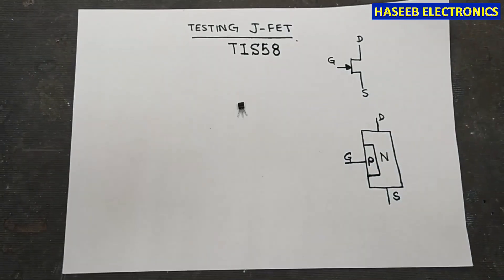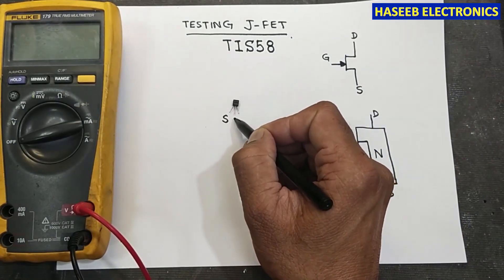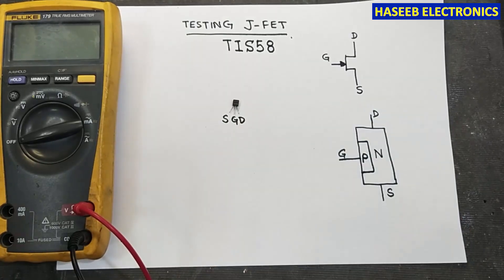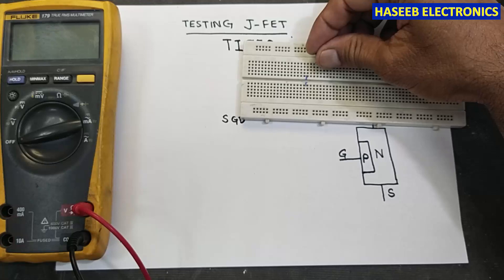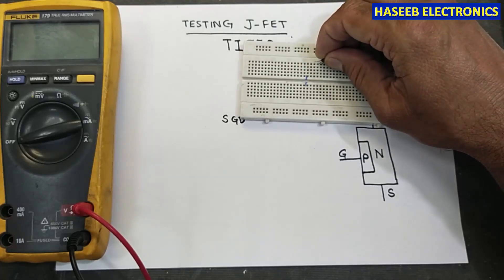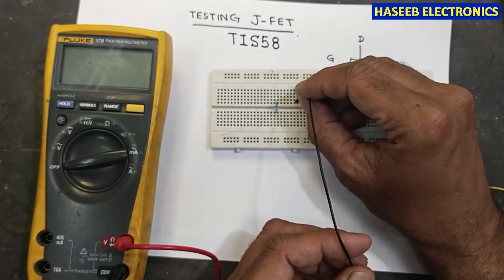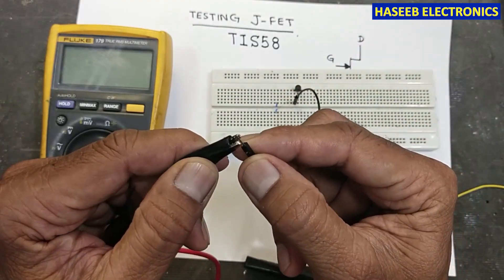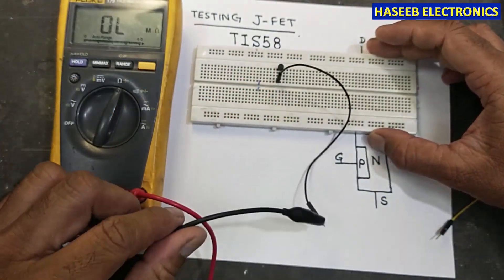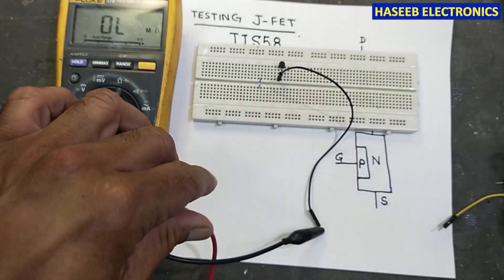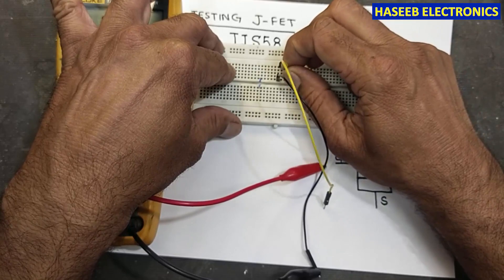Now, how can we test this using a multimeter? The first pin is source, the second is gate, and the third is drain. I will connect it on the project board so it will be easy to test. We will connect the source to the negative terminal of the multimeter and set the multimeter to measure ohms.